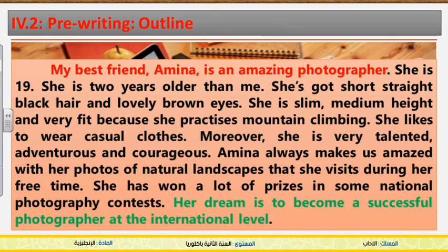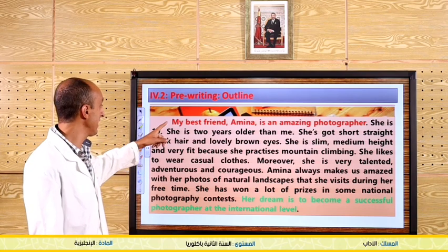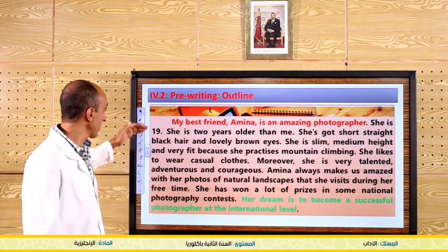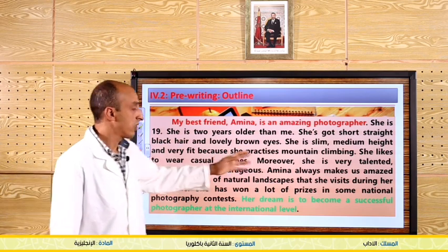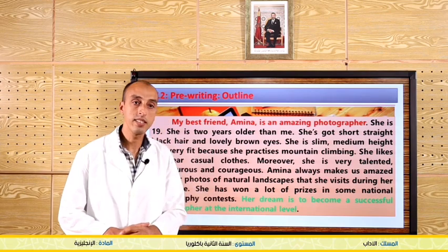Finally, let's read the last sentence: 'Her dream is to become a successful photographer at the international level.' That's the concluding sentence. It's a paraphrase of the first sentence — here we're talking about being a photographer, which guarantees cohesion in the paragraph. Remember to begin your paragraph with an indentation or a space at the beginning, and don't skip lines. That's an example of a paragraph.